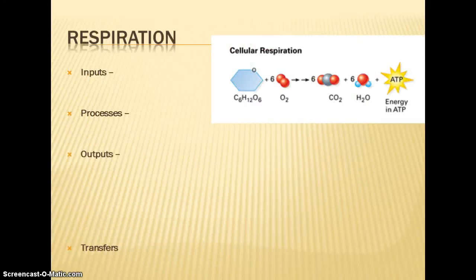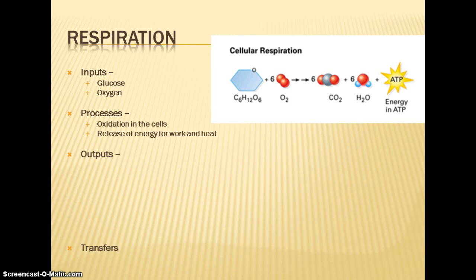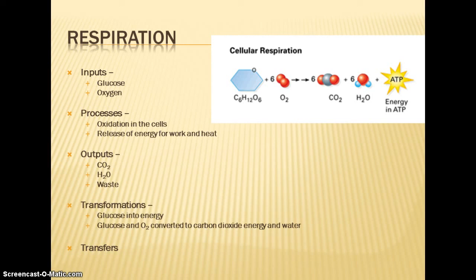Respiration, which we can look at as the reverse of photosynthesis. Your inputs are your glucose and your oxygen. What happens: you get oxidation in the cells, and that releases the energy that's stored in the glucose for work and for heat. So the outputs are carbon dioxide because you've got the carbon from the glucose combined with the oxygen. And then you also get water from the hydrogen in the glucose combined with the oxygen. Then you're also going to have your waste energy or your heat.